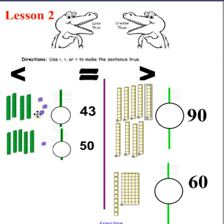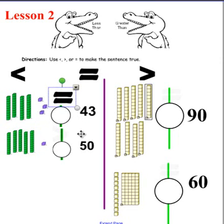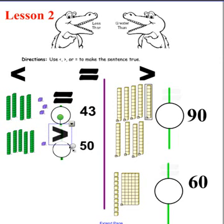Let's look at the first one. We have ten, twenty, thirty — forty-three is equal to forty-three, so you should have placed the equal sign. The next one, we have fifty-one. Fifty-one is greater than fifty, so you should have placed that sign.